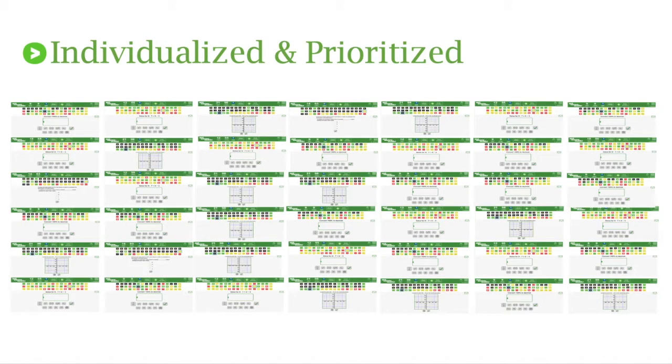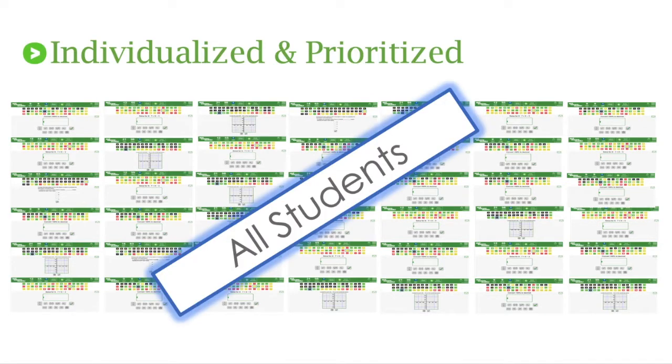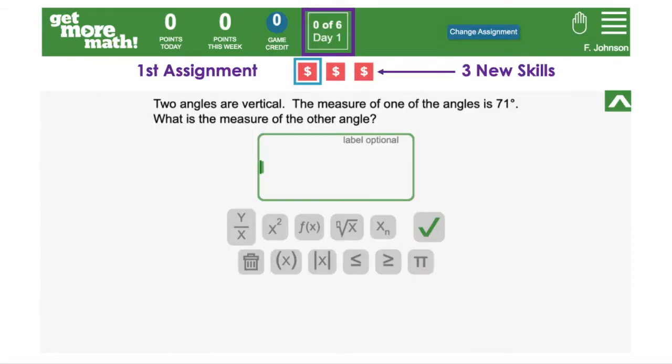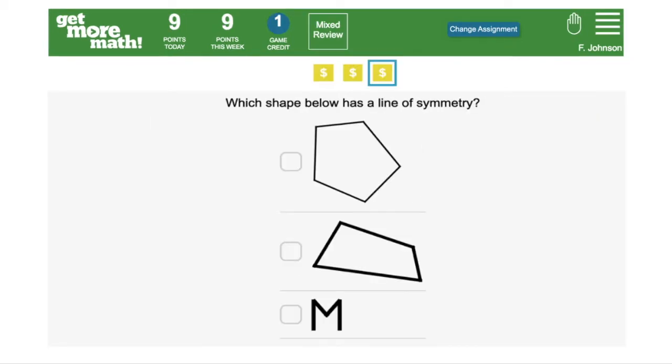Get More Math individualizes and prioritizes the practice for all students. And as an added bonus and time saver, mixed review builds automatically. When you assign the first assignment, say you include three new skills. When your students automatically transition to mixed review after completing that first assignment, they'll have those same three skills in mixed review.